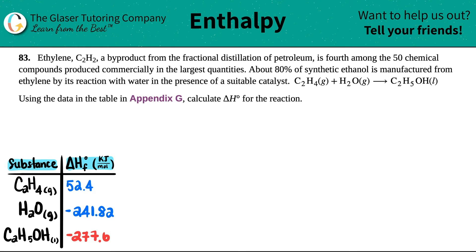Number 83. Ethylene, which is C2H2, a byproduct from the fractional distillation of petroleum, is fourth among the 50 chemical compounds produced commercially in the largest quantities. About 80% of synthetic ethanol is manufactured from ethylene by its reaction with water in the presence of a suitable catalyst.